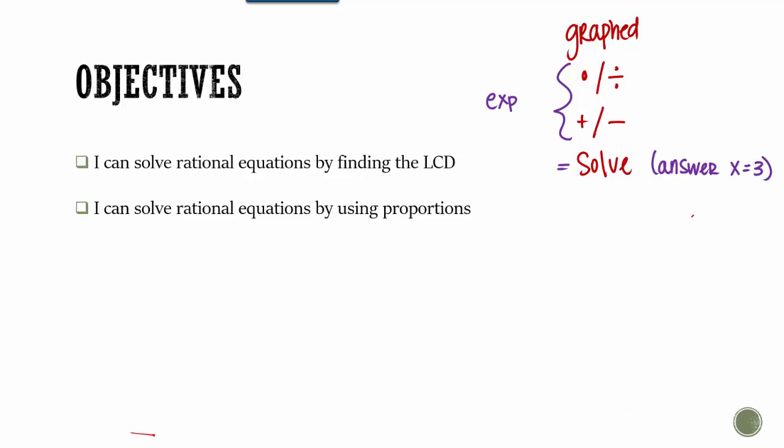By the end of this lesson, you should be able to solve rational equations by finding the LCD, hopefully that word's familiar or acronym, least common denominator. And then you should be able to solve rational equations by using proportions. And this one's going to look very familiar, but now that we know how to solve quadratics, we're going to have to use that for this.